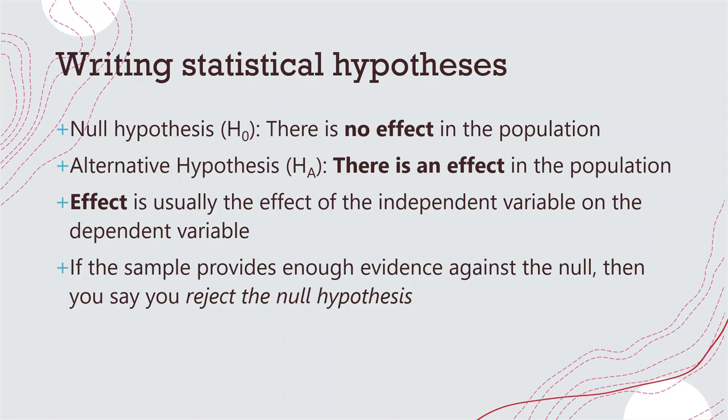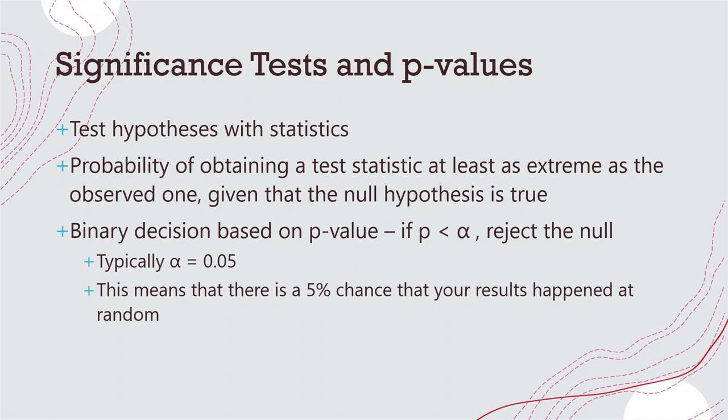Significant tests and p-values. We are always testing hypotheses with statistics. Significance testing is the probability of obtaining a test statistic that is at least as extreme as the observed one, assuming the null hypothesis is true. When we run statistics to test our hypothesis — this can be our t-test, ANOVA, correlation regression, etc. — these tests always have a p-value in the result. What these tests are doing is calculating the test statistic, and you don't need to know the math behind each statistic because R does that on the back end for you.